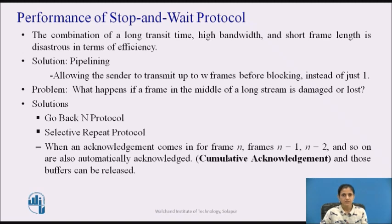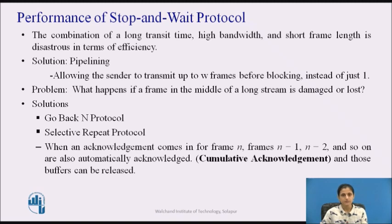The problem can be viewed as a result of the rule requiring a sender to wait for an acknowledgement before sending another frame. If we relax that restriction, much better efficiency can be achieved. Basically, the solution lies in allowing the sender to transmit up to W frames before blocking, instead of just one. With a large enough choice of W, the sender can continuously transmit frames since acknowledgements for previous frames will arrive before the window becomes full, preventing the sender from blocking. This technique of keeping multiple frames in transit is called pipelining.